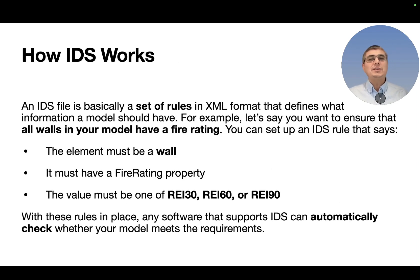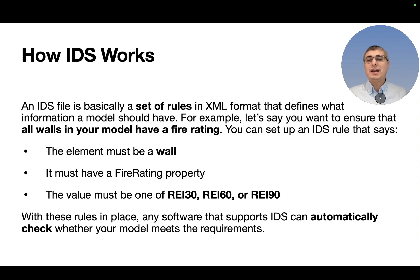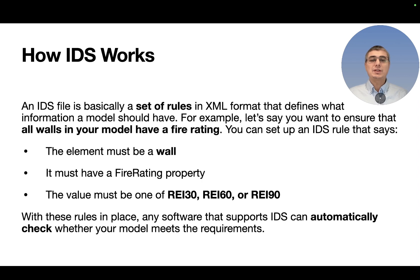How does IDS work? An IDS file is basically a set of rules in XML format that defines what information a model should have. For example, let's say you want to ensure that all walls in your model have a fire rating. You can set up an IDS rule that says the element must be a wall, it must have a fire rating property, and the value must be one of REI 30, REI 60, or REI 90. With these rules in place, any software that supports IDS can automatically check whether your model meets the requirements.